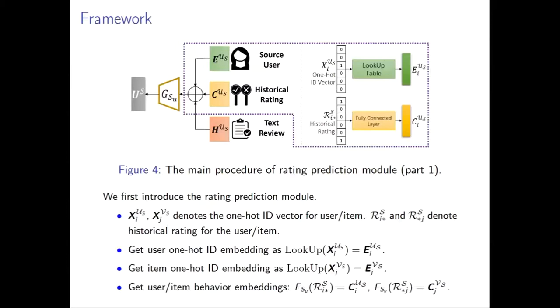For convenience, we use the notation and calculation process in the source domain as an example. We adopt a trainable lookup table to explore the user and item one-hot ID embeddings. Then we utilize the fully connected layers to obtain user and item behaviour embeddings.